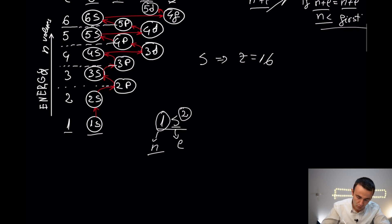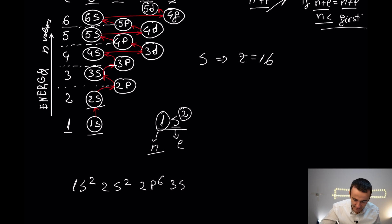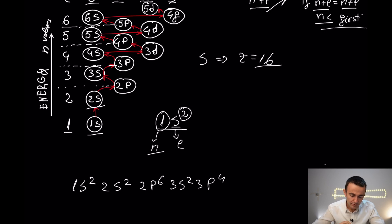The full configuration is: 1s², 2s², 2p⁶, 3s², 3p⁴ — a total of 16 electrons. So this is the electronic configuration for sulfur. It can also be written with boxes.